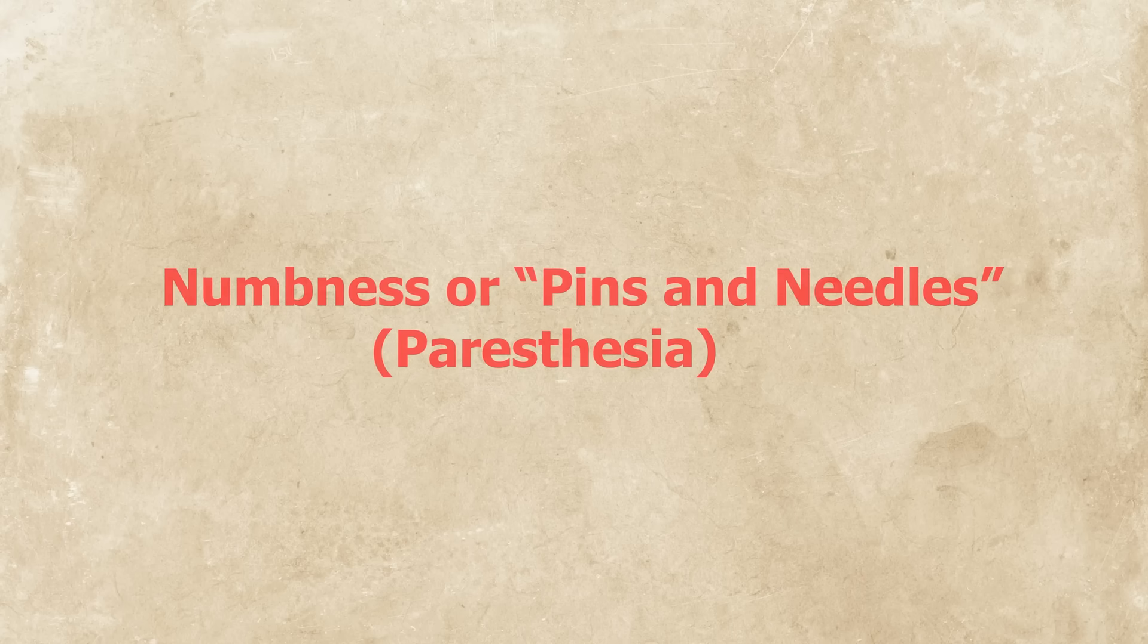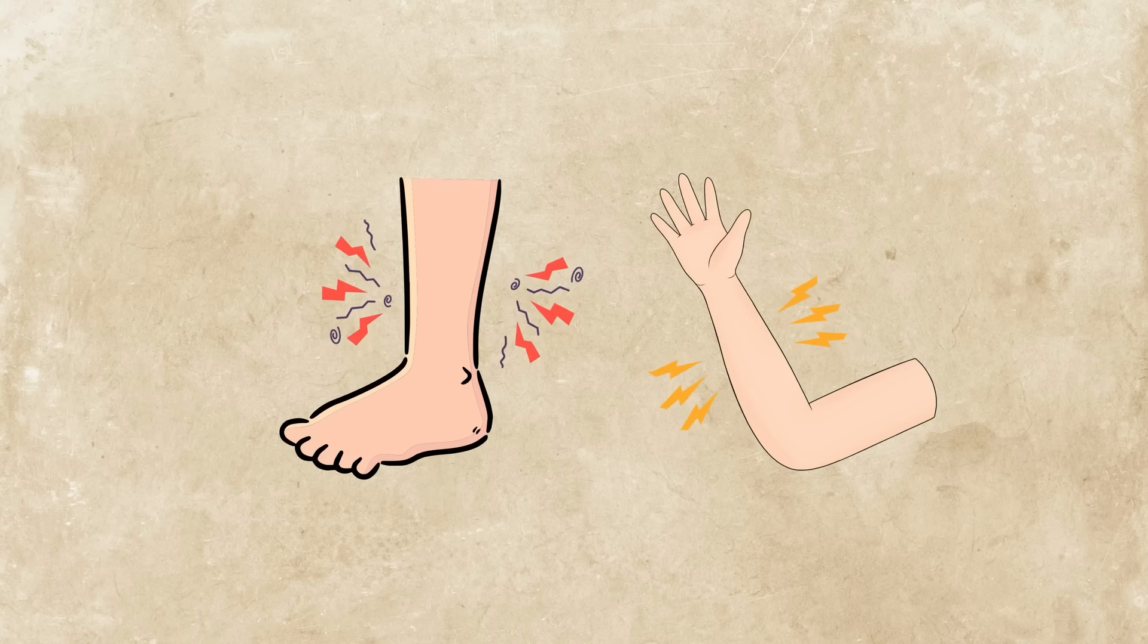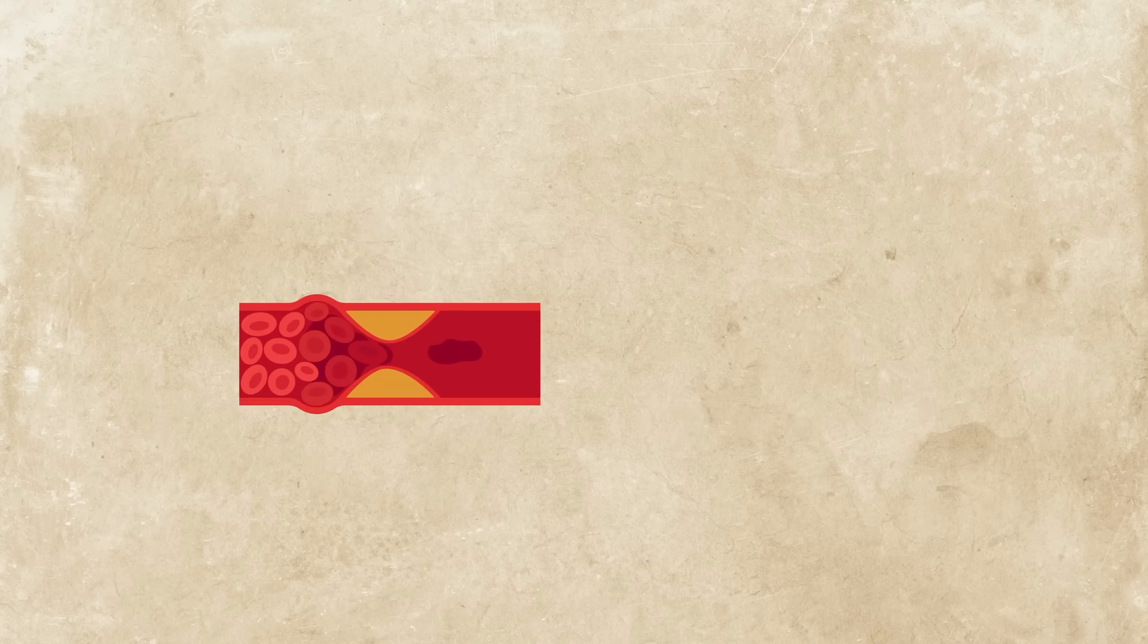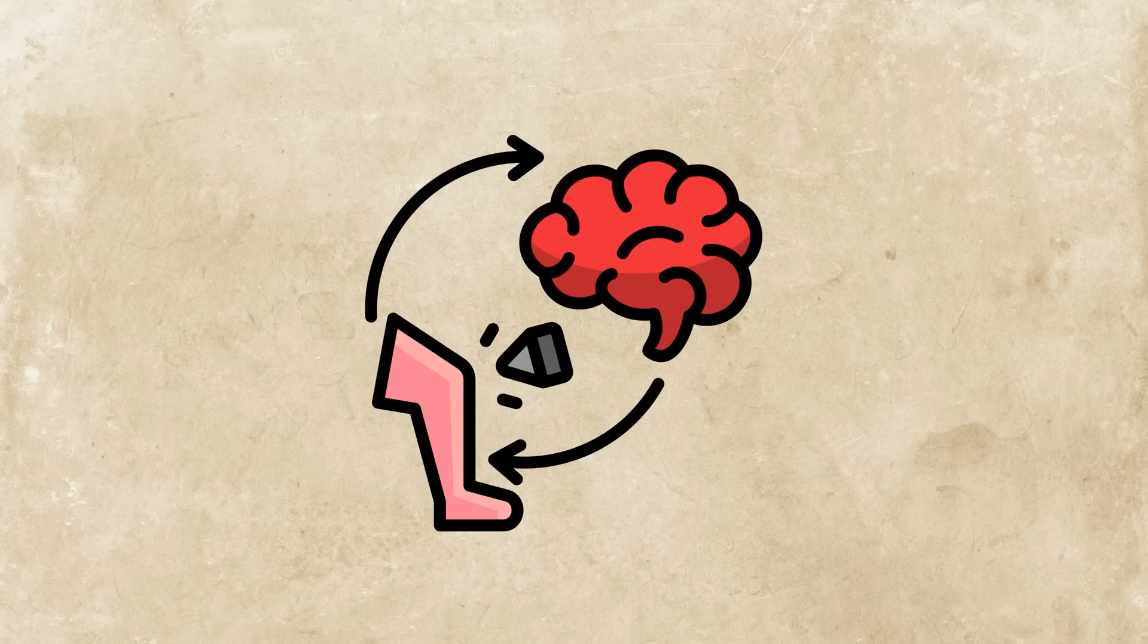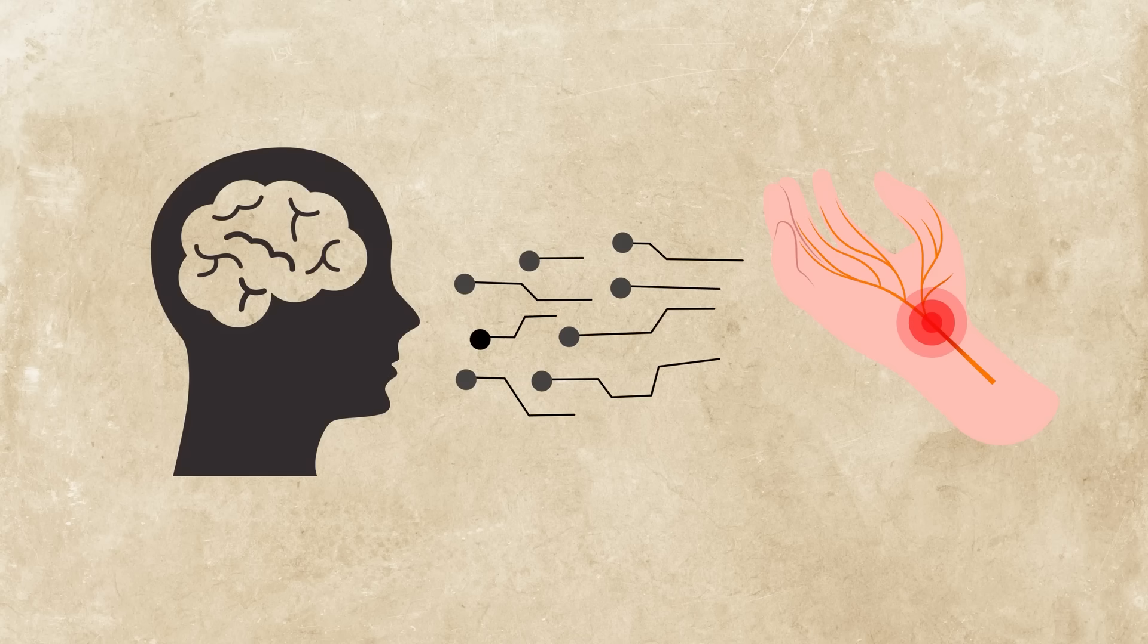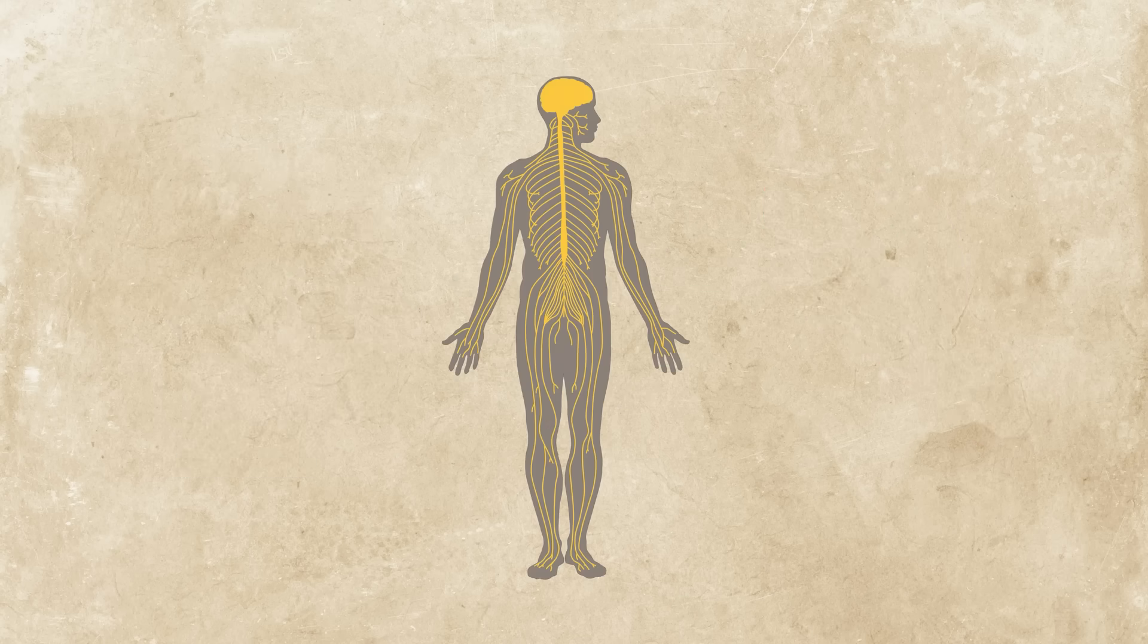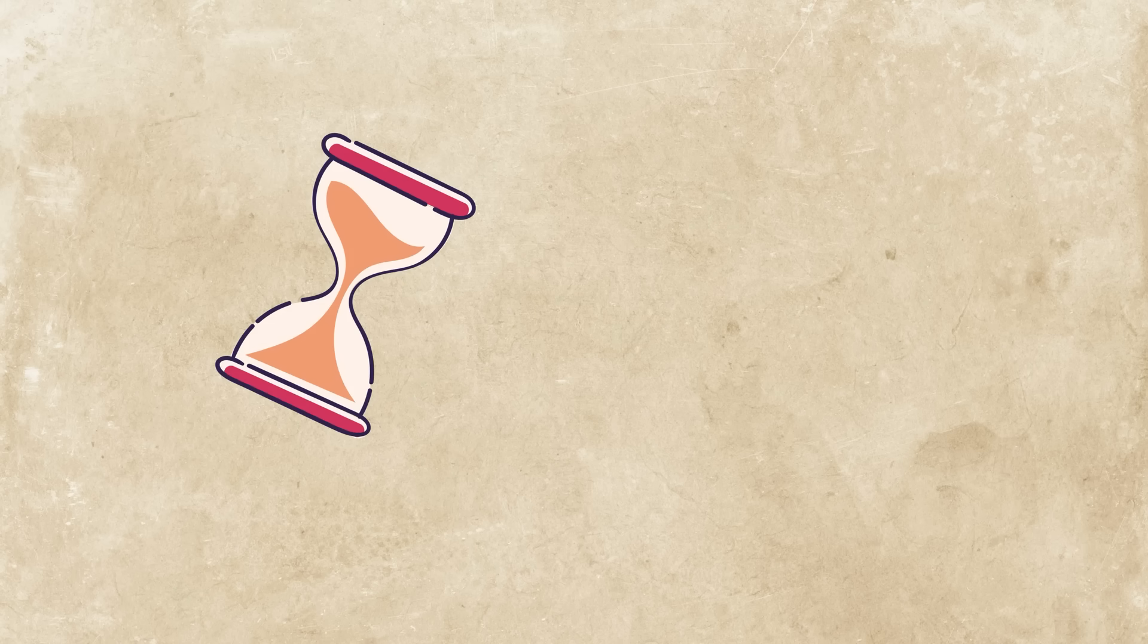Numbness or pins and needles. Paresthesia. You sit on your leg too long and then it wakes up with a flurry of tingles. This is paresthesia. It happens when pressure cuts off blood flow or compresses a nerve and the disrupted signals come rushing back all at once. It's not actual needles. It's misfiring nerve endings sending scrambled messages to your brain. Your nervous system is essentially rebooting. This glitch usually passes quickly, but in the moment it feels like your body forgot how to be a leg.